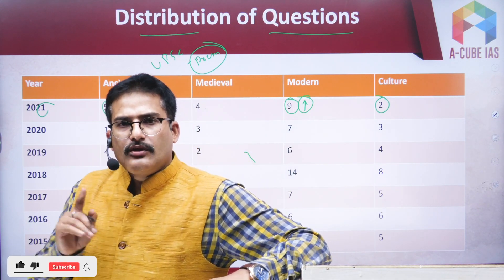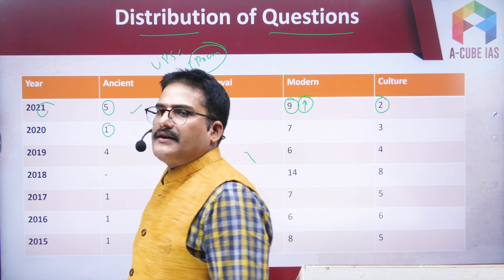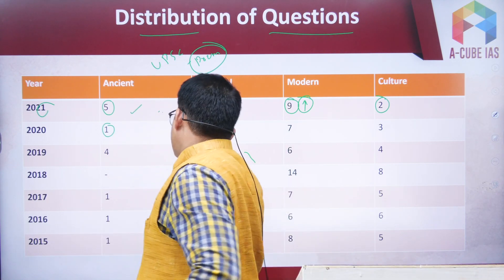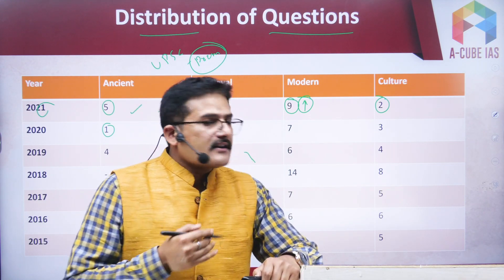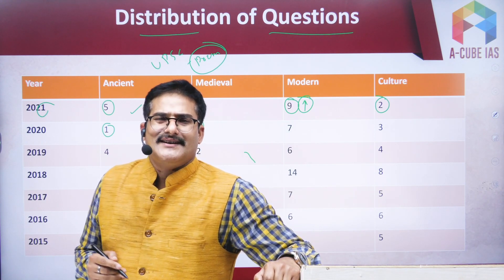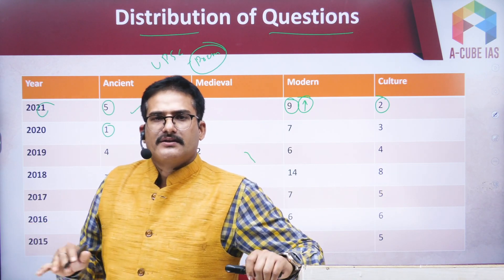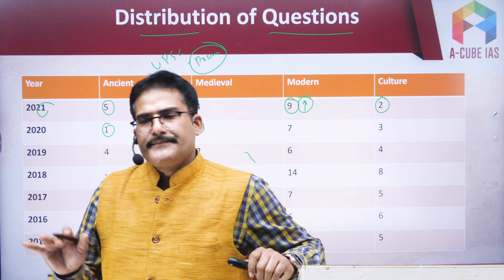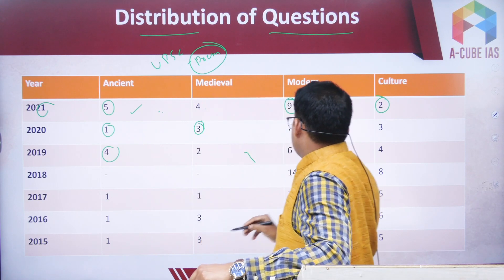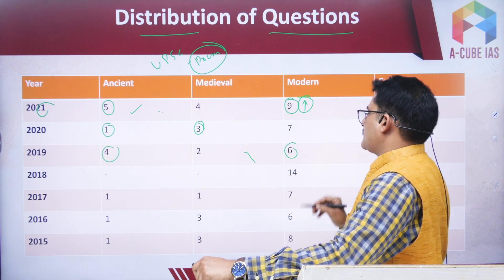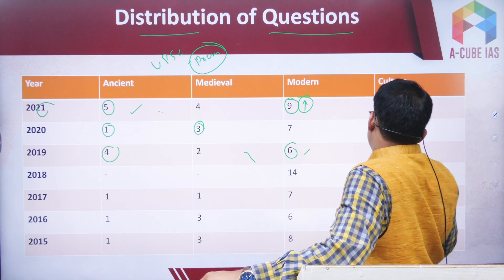In 2020, there was only one question from ancient, three from medieval, seven from modern, and three from art and culture — again showing a clear trend that modern India gets the most weight. In 2019, there were six questions from modern India, four from ancient, and four from culture, similar to 2020.